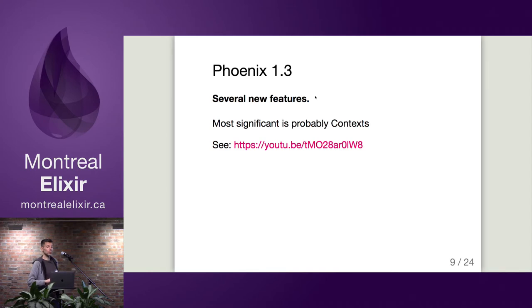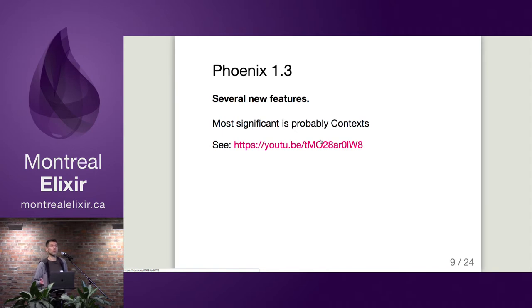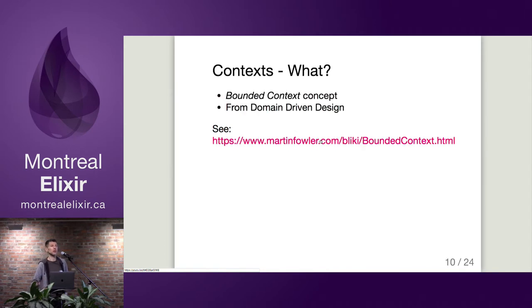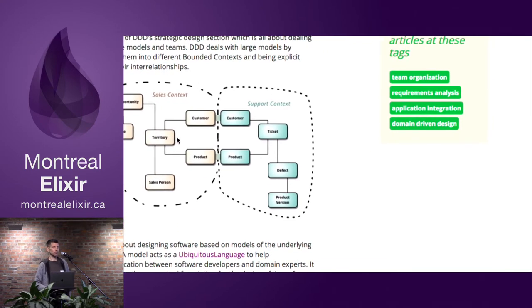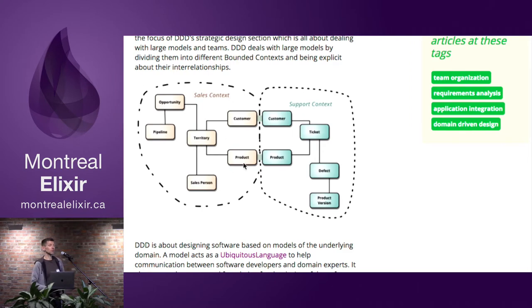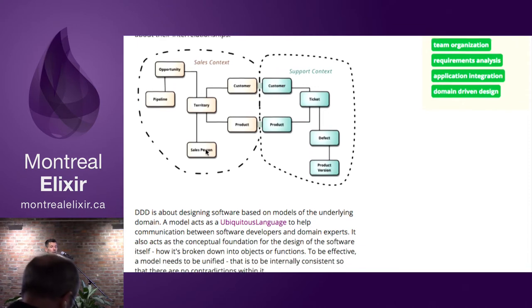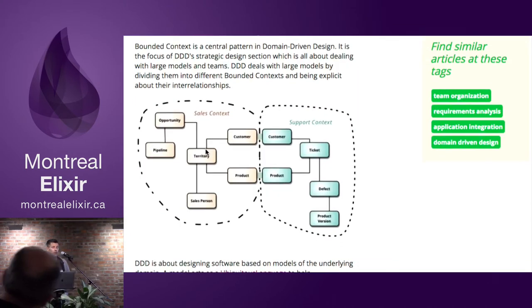Of the features of 1.3, the one most interesting to me was contexts. There's a link to a GitHub repo with all this stuff, including Chris McCord's talk about the new features in 1.3 - definitely a good watch. Contexts come from the concept of bounded context from domain-driven design, which Chris McCord mentioned as well. It's basically breaking up your domain into different contexts, and how you apply that can vary a lot.